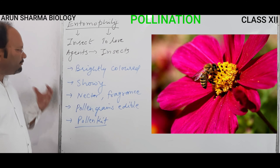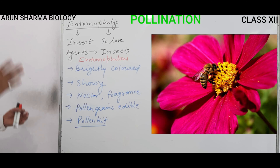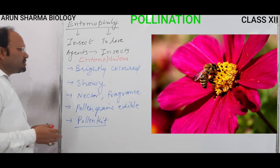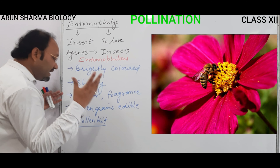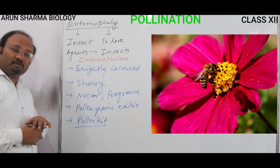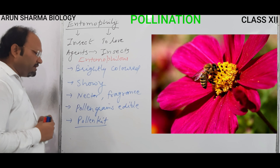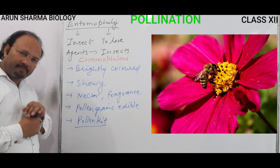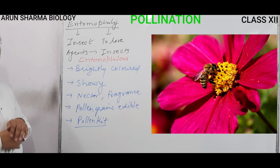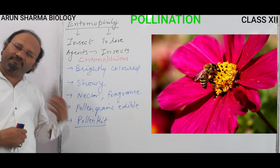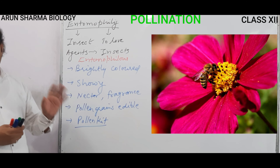They may also have pollen kit — a yellow-colored substance which sticks to the insect body. So these are the specific features of entomophilous flowers. Flowers that are entomophilous in nature are brightly colored, showy, have nectar, have fragrance, and have edible pollen grains — all to attract different animals and organisms. They may also have pollen kit to facilitate pollination.